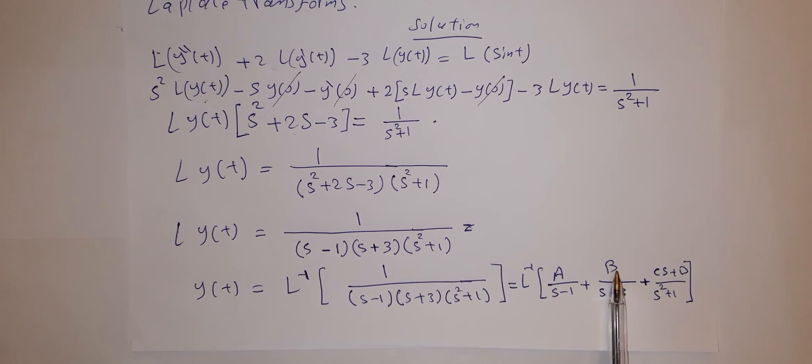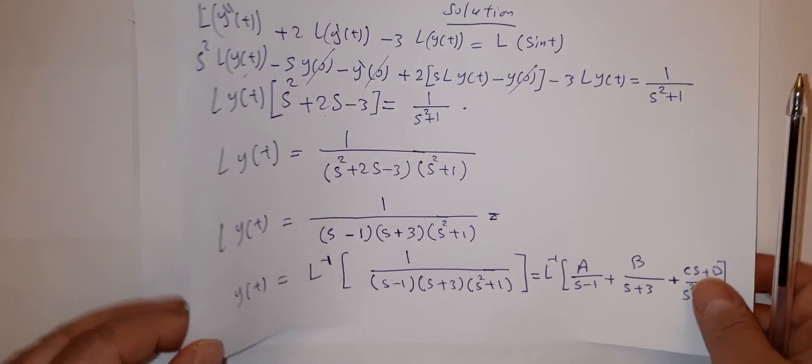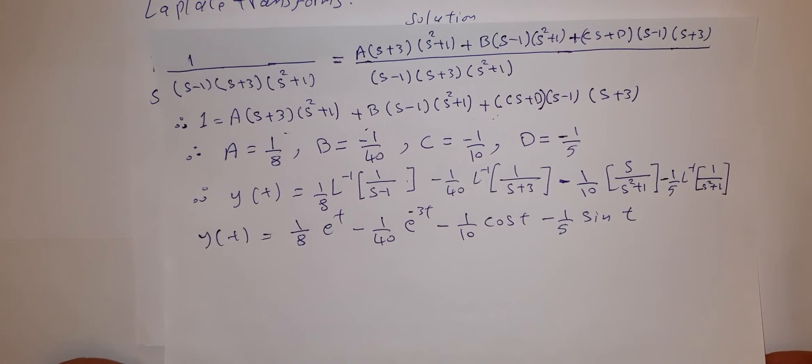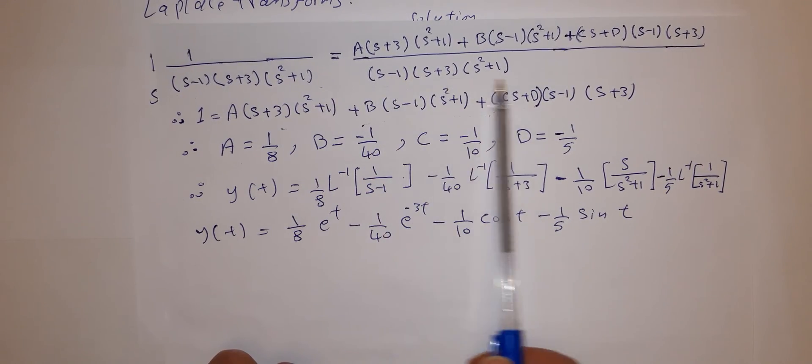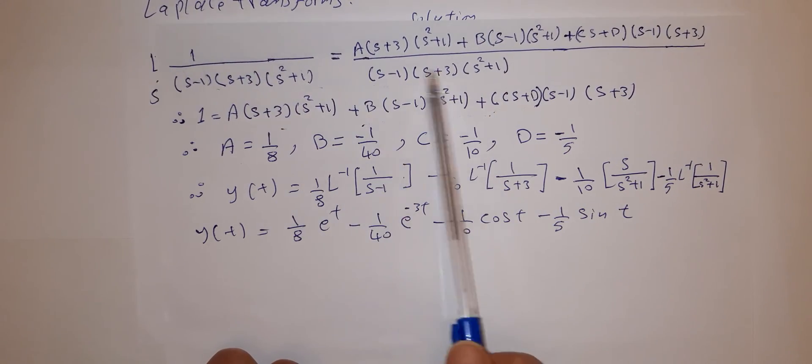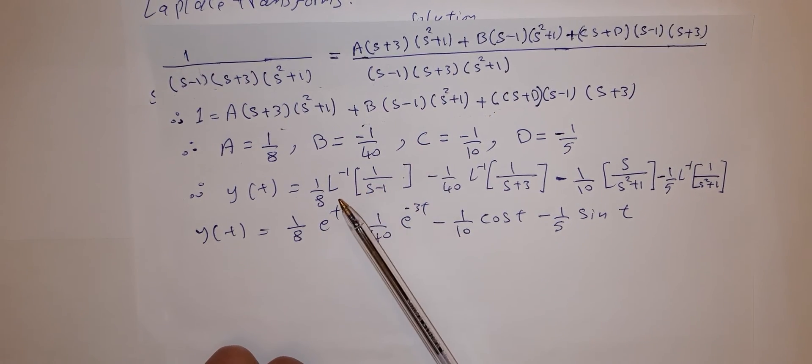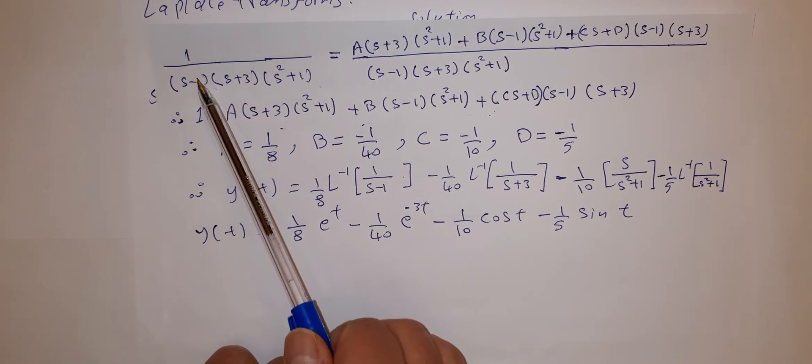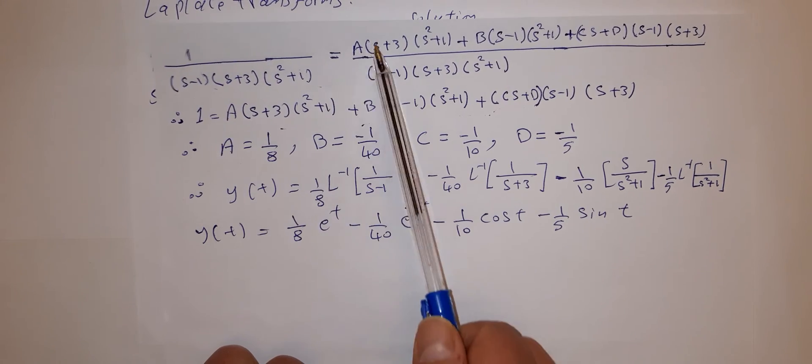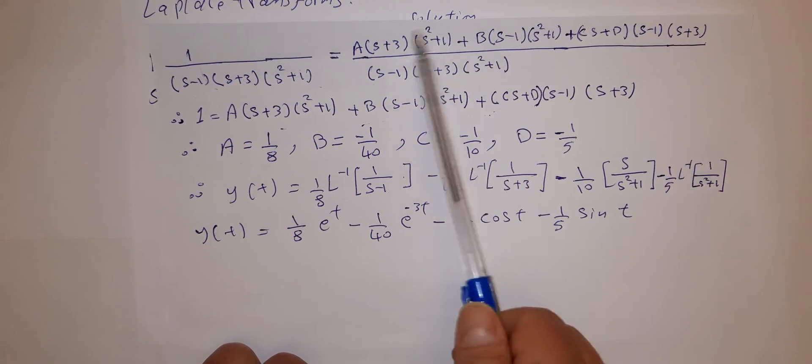Now you have to find these constants A, B, C, and D. Number one: find the common denominator. After finding the common denominator, you can compare between the two sides. Here equal denominators, so we have equal numerators: 1 equals all of these guys here.